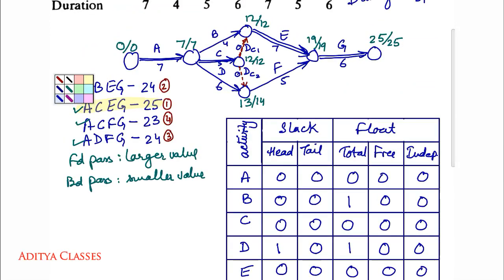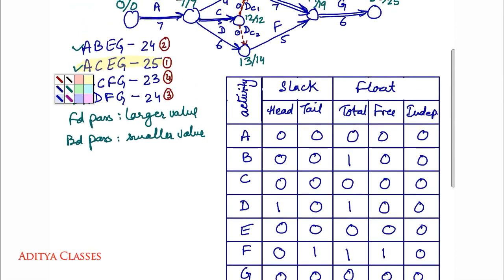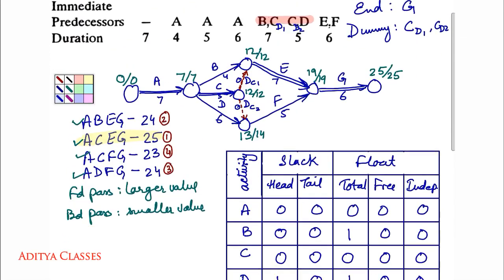For activity G: head slack is 25 minus 25 equals 0; tail is also 0. Total float: 25 minus 19 minus 6 equals 0. Everything for G turns out to be 0. Here are all the slacks and floats for the given network.